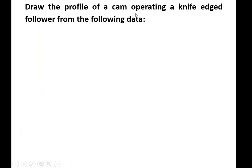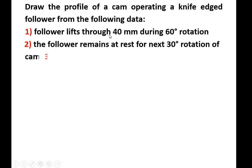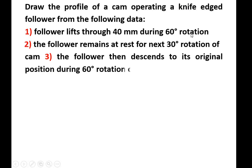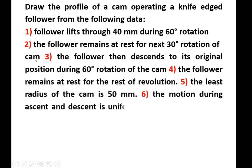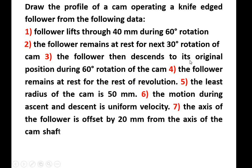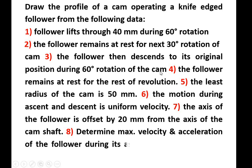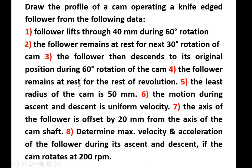Let's take one example: draw the profile of a cam operating a knife-edge follower. The follower rises through 40 mm (stroke length) during 60 degrees of rotation (angle of ascent). The follower remains at rest for the next 30 degrees (dwell period), then descends to its original position during 60 degrees (angle of descent). The follower remains at rest for the rest of the revolution (remaining dwell). The least radius of the cam is 50 mm (base radius). The motion during ascent and descent is uniform velocity. The axis of the follower is offset by 20 mm from the axis of the cam shaft.